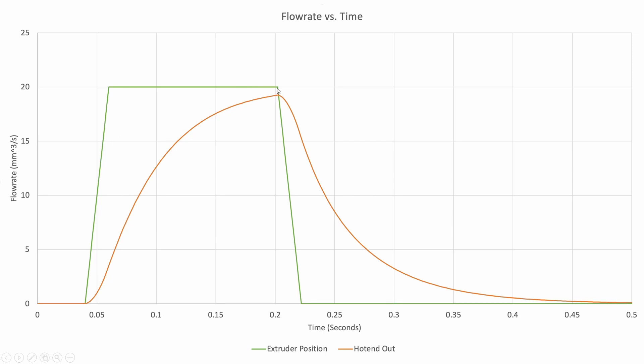But then at the end where the tool head starts slowing down, we have all of this excess plastic that's getting extruded even well after the tool head stops. So in this case there's going to be a bulge or over-extrusion. So both of these are bad.